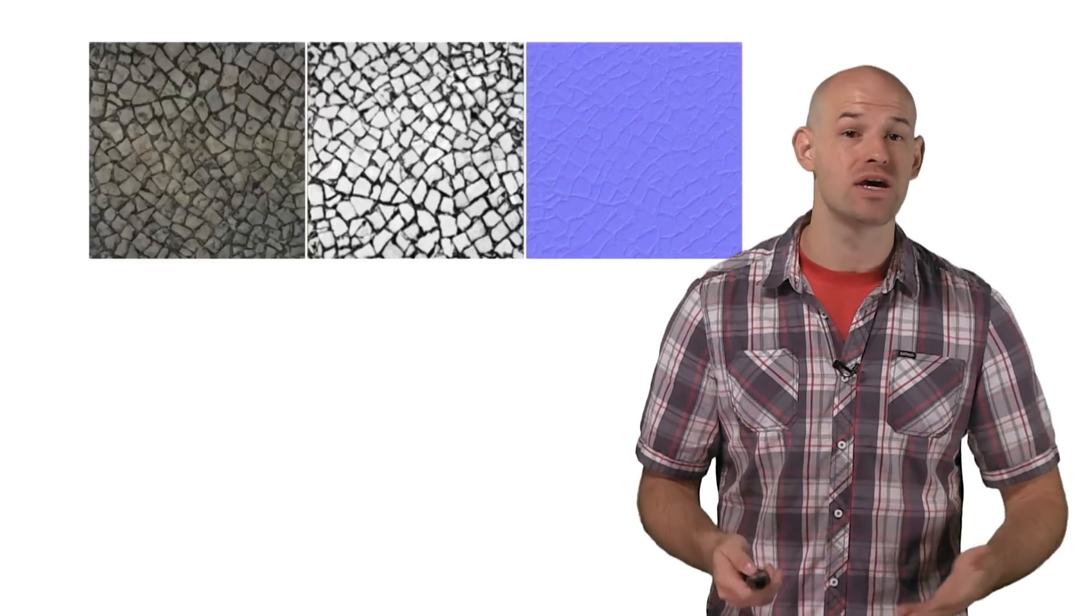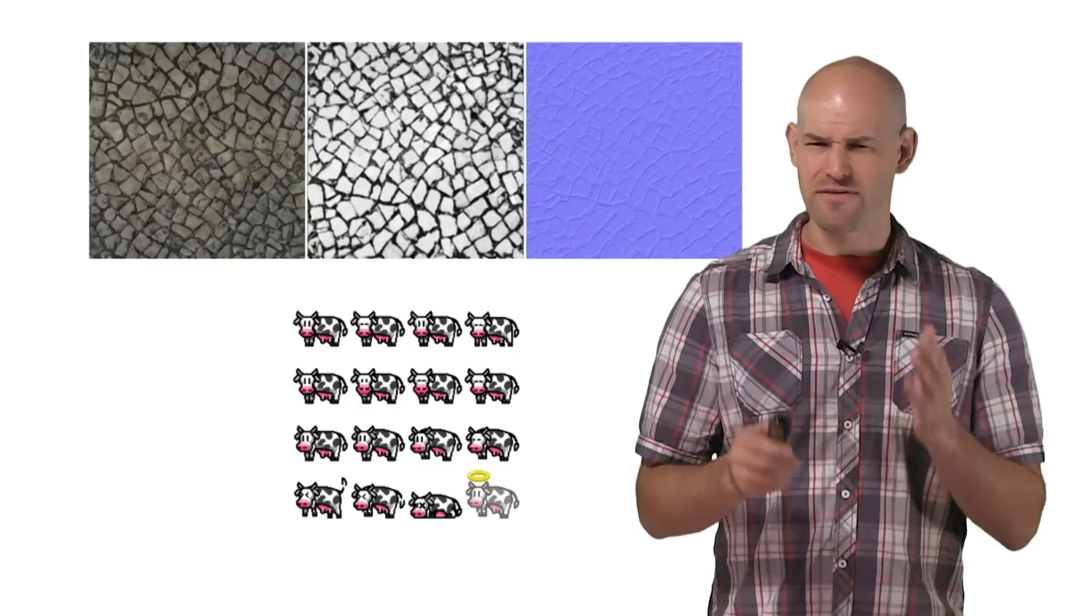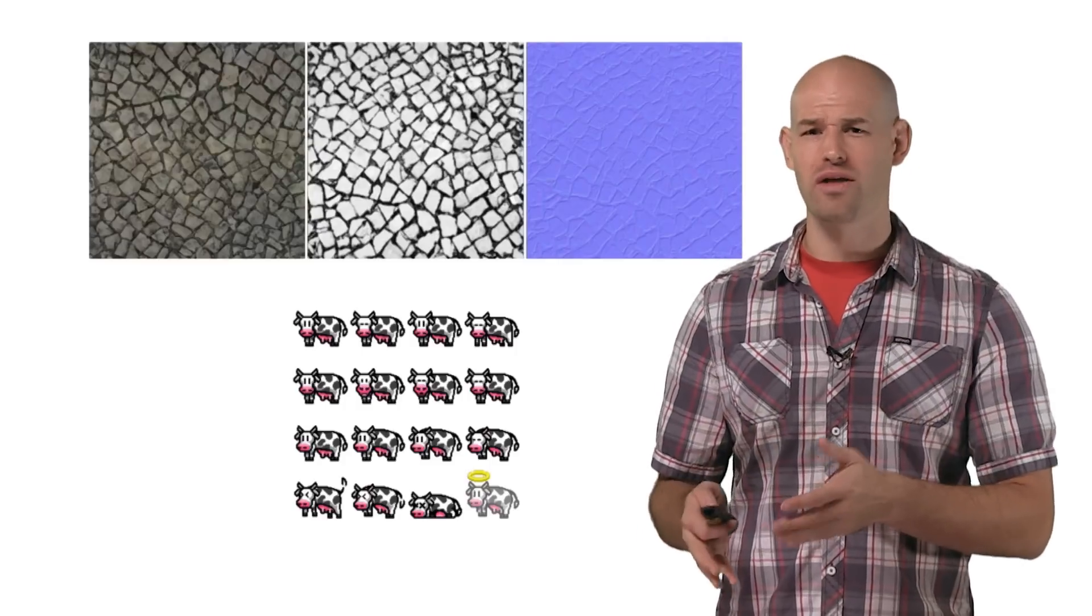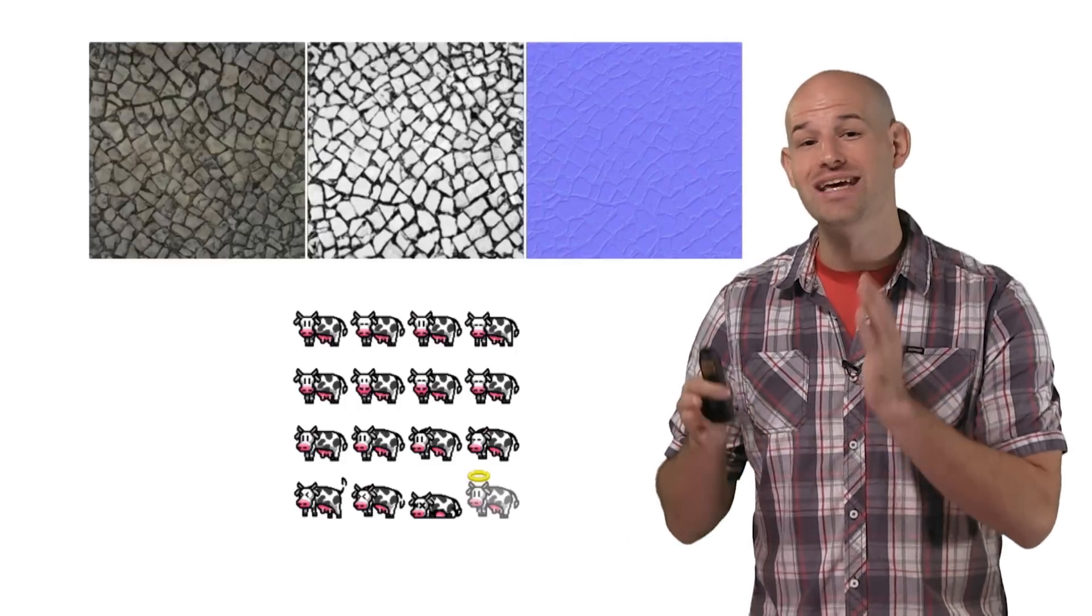It's important to understand that one compression level doesn't work for all images in your game. Diffuse maps are different than normal maps, which are different than alpha maps, which are specifically different than highly transparent UI images. Which means that finding the right balance between image quality and size means finding the right types of compression settings for each image.